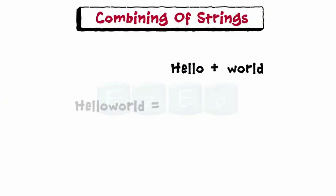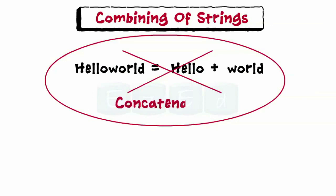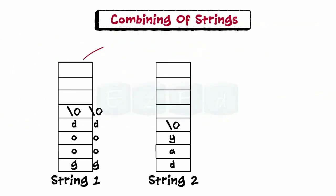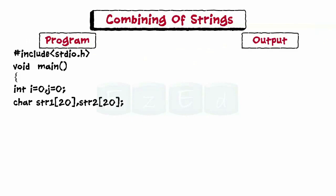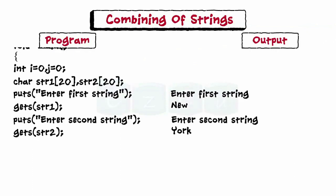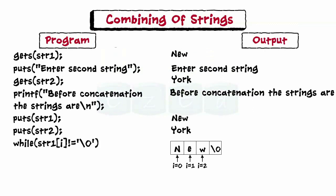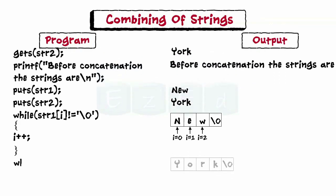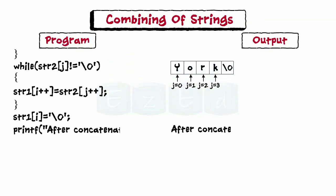Now we will learn combining of two strings. We cannot combine two strings together by simple arithmetic addition — in C, this process is termed concatenation, where the characters of string 2 are copied one after the other to the end of string 1 into string 3. In the program, after declaring variables and scanning in the two strings, a while loop sets the counter to the last element of string 1. Another while loop copies string 2 to the end of string 1 character by character, after which the result is displayed.